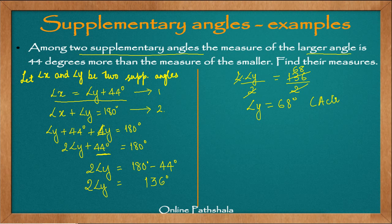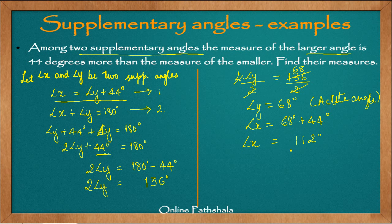Angle Y, at 68 degrees, is an acute angle and it is the smaller of the two. If you remember, in order to make a supplementary pair, we need one acute angle and one obtuse angle. Using equation 1, angle X — the larger angle — is 44 degrees more than angle Y. So we find angle X by adding 68 degrees plus 44 degrees. 4 plus 8 is 12, 6 plus 4 is 10 plus 1, giving us 112 degrees. So angle X is 112 degrees. Adding angle X plus angle Y — that is 112 degrees plus 68 degrees — the sum comes out to be 180 degrees.